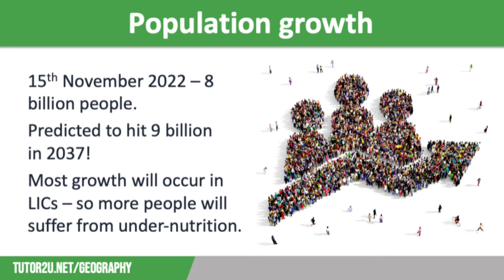Therefore, population growth is likely to lead to more people suffering from undernutrition. Countries with the lowest gross national income, or GNI, per capita also tend to have the highest fertility rates, meaning that global population growth is mainly concentrated in the poorest countries, usually in sub-Saharan Africa. In fact, population growth across the whole of Africa is 2.5% per year, compared to just 0.1% in Europe.